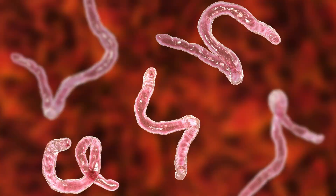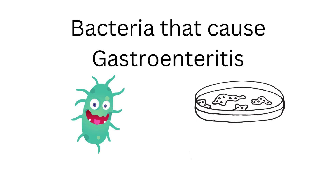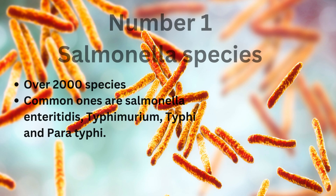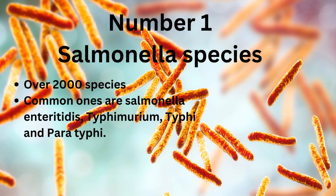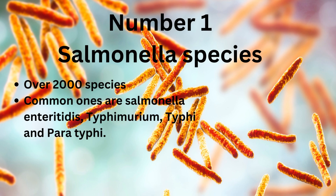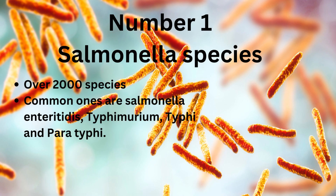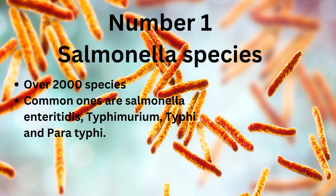Let's look at what bacteria — in simple terms, bugs — cause gastroenteritis. The first one is Salmonella. There are over 2,000 species, named mainly by the city they were initially discovered. Some of the common ones are Salmonella enteritidis, Salmonella typhimurium, Salmonella typhi, and paratyphi. The last two are more common in developing countries.